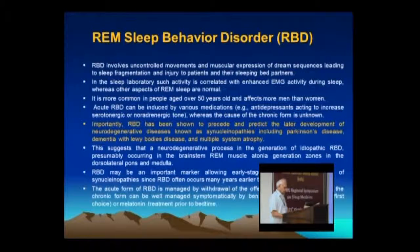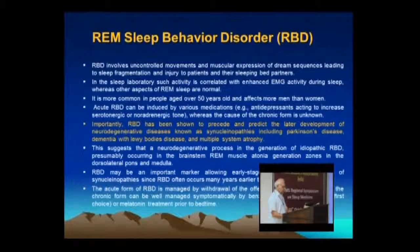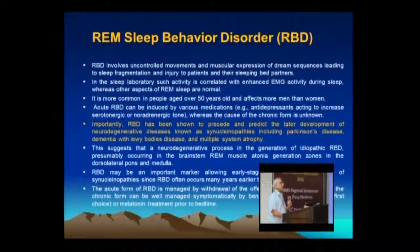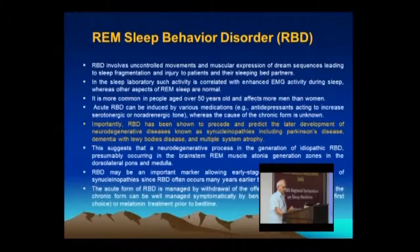Since RBD often occurs many years earlier than other synucleinopathy conditions, it may be an important biomarker allowing early preventive treatment. The acute form of RBD is managed by withdrawal of offending medication such as antidepressants, whereas the chronic form is managed symptomatically by clonazepam and melatonin. Treating RBD is important as it is a predisposing factor for various degenerative diseases including Parkinson's at a later stage.